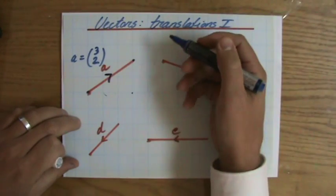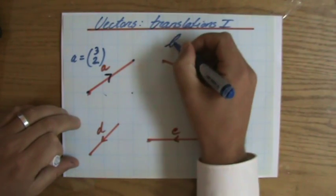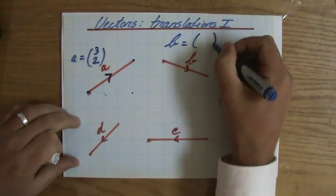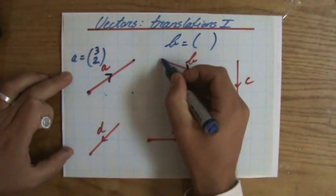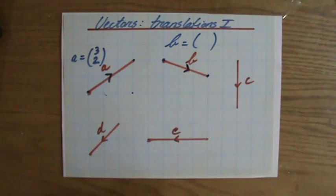Then question B. What would be the single column notation for that? Now the direction is important. Always take a second to look at that. It's that direction. So I'm starting here and I'm finishing there.